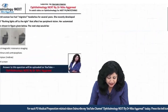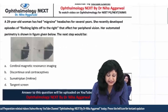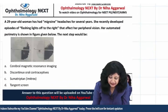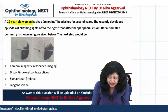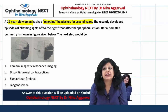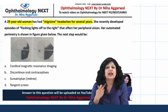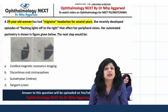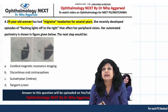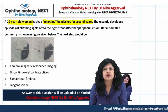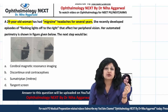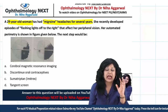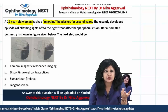Here we have a 29-year-old woman having migraine headaches for several years. They are giving you the diagnosis, but always remember that you have to infer your own diagnosis from the question — it could be one of the differentials also.